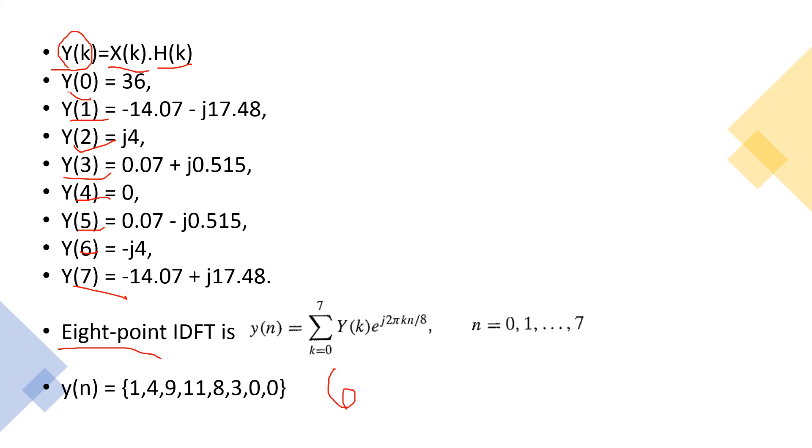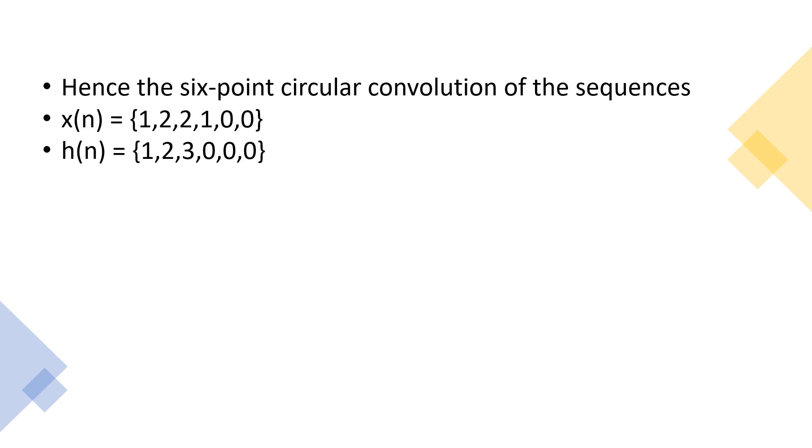What we required is a 6-point DFT. So we only take the first 6 values of the output. So we calculated the 6-point circular convolution of the sequences input x of n and impulse h of n by adding zeros.